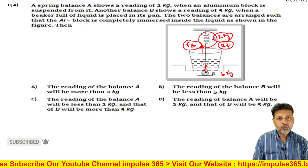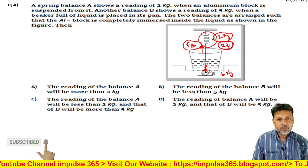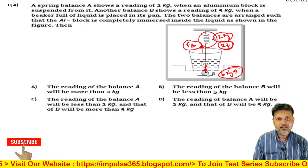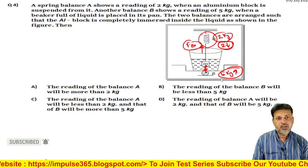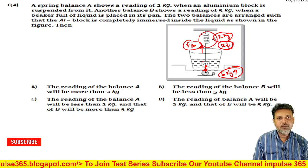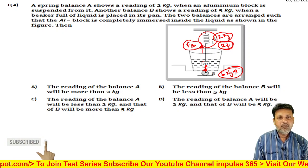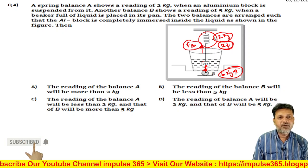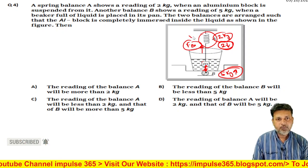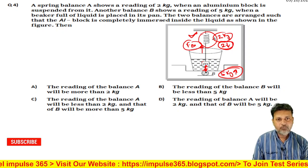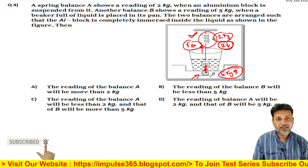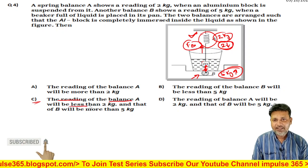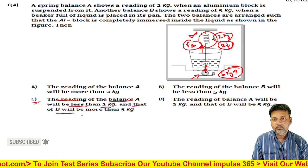The reaction force will also act downward. Whatever force is reduced in A's 2 kg reading, that same force acts downward, meaning the 5 kg spring balance B — the weighing machine — will increase by that much weight. So the upper spring balance A will show less weight, and force in B will increase. The most appropriate option is C: reading of balance A will be less than 2 kg and that of B will be more than 5 kg.